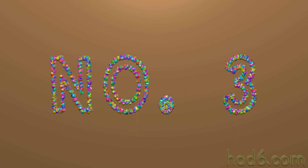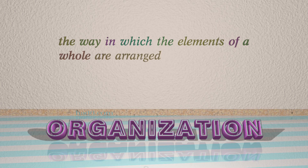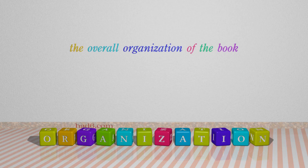Number 3: Organization. Which means the way in which the elements of a whole are arranged. For example: The overall organization of the book.